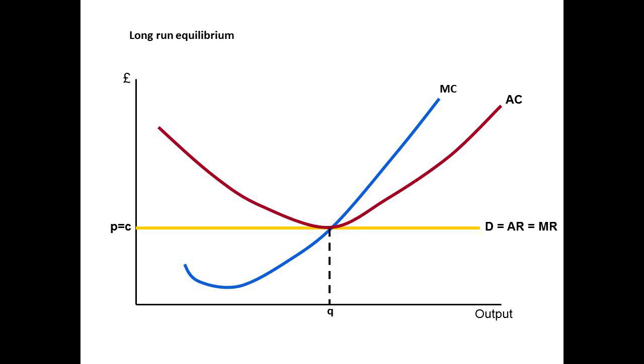We can reach the same long run equilibrium whether we start with a short run supernormal profit or a short run loss. We'll look at both examples, starting with a short run supernormal profit.